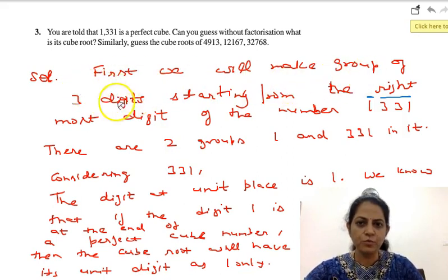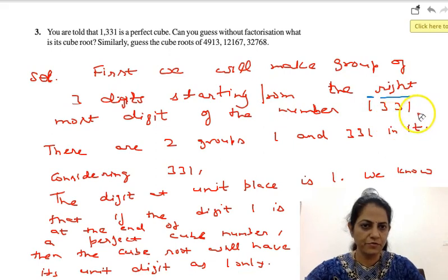First, we will make groups of three digits starting from the rightmost digit of the number. The first number is 1331. Starting from the right, these three I will keep in one group, this one is left, this is another group.